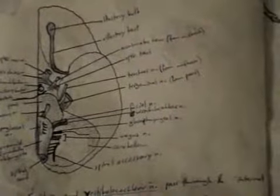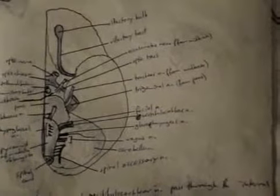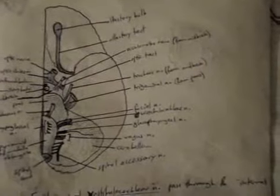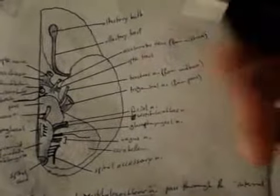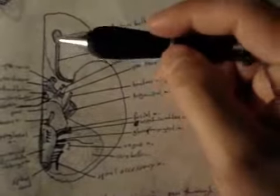Okay, so the 12 cranial nerves, because they're part of the peripheral nervous system, we do not call them 12 cranial tracts. We call them 12 cranial nerves because they're part of the peripheral nervous system. So we use the term nerve.